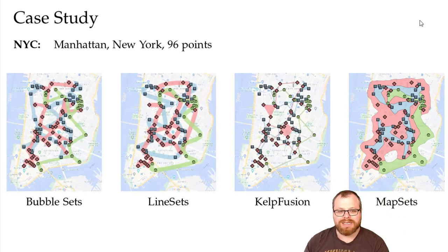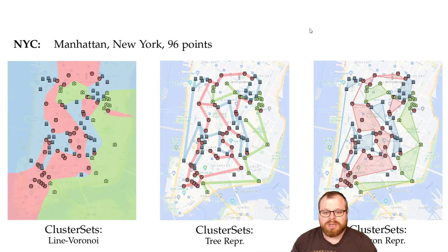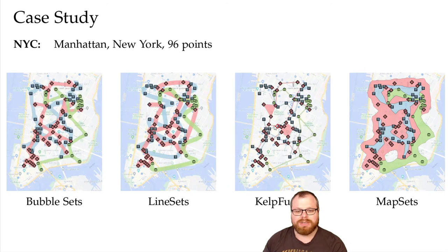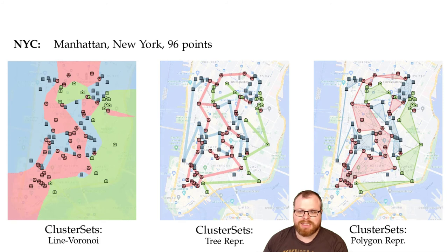The second dataset is from Manhattan and has been used as benchmarks before. If we compare the different styles from the literature, we can see that the bubble sets, line sets and kelp fusion have many crossings between their sets. While in the map sets, we don't have crossings, but those polygonal shapes can be very complex. In the line Voronoi representation, we can clearly make out the clusters, and this seems to work particularly well because the points are almost evenly separated throughout the map.